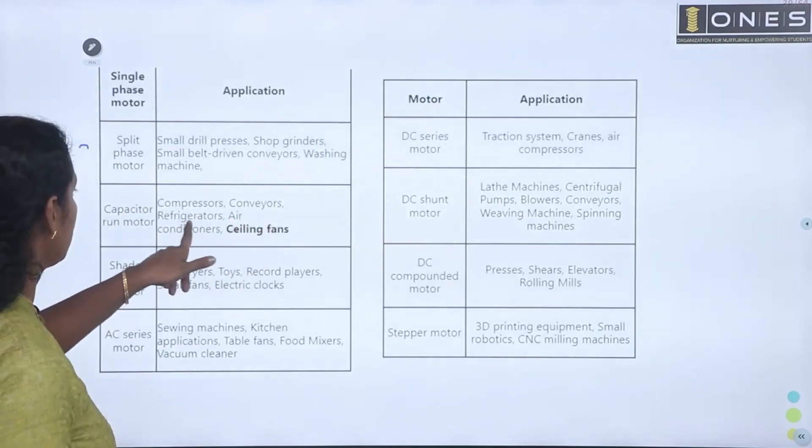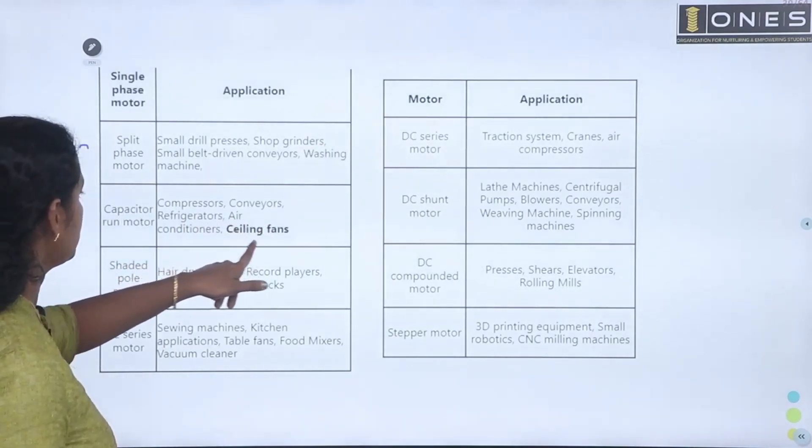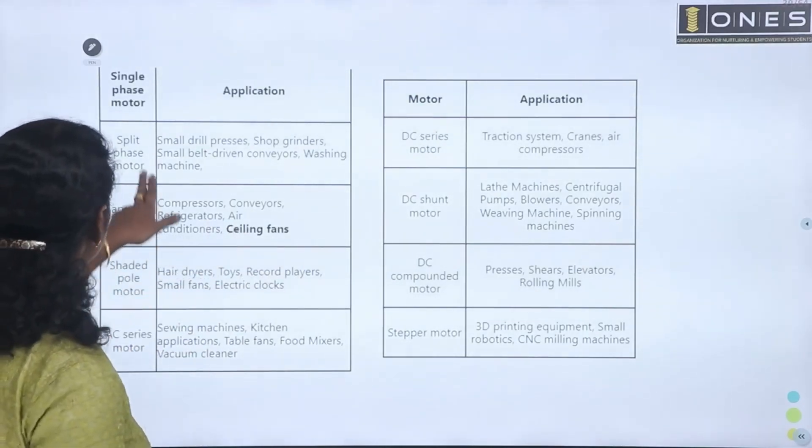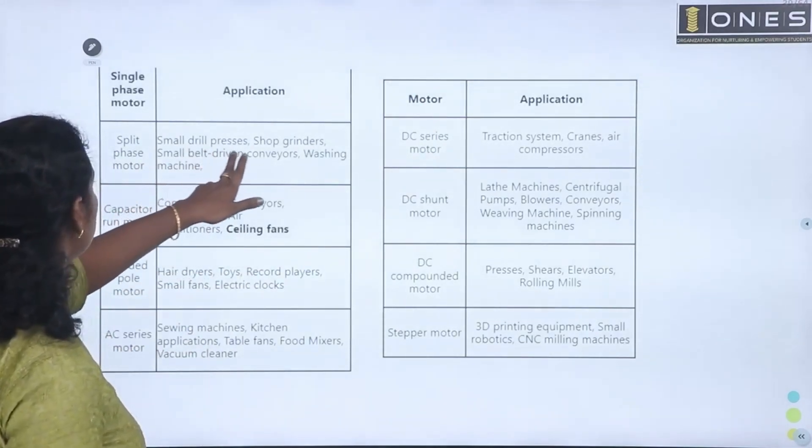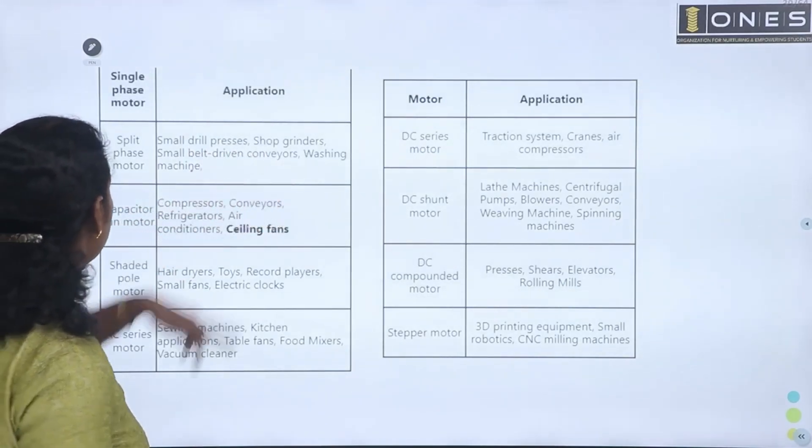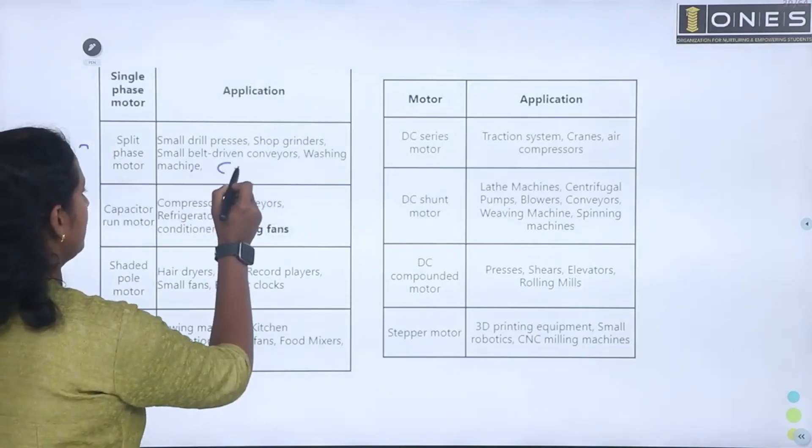Compressor, conveyors, refrigerator, air conditioner, ceiling fan. Split phase motor is used in small drill press, shop grinders, washing machine. I am going to show you what is used in ceiling fan.